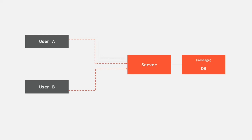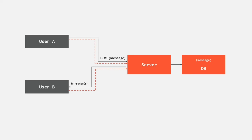Now when User A sends a new message to the server, it is first created in the database. Since there is already a connection between User B and the server, User B does not have to send a new request to fetch the new messages. Instead, once the server has received that new piece of data, it will notify all the required clients. In this case, the server sends the data to User B, because the message was intended for User B. User B has not made any new request — the server automatically sent the data to User B because there is already an open TCP/IP connection between User B and the server.